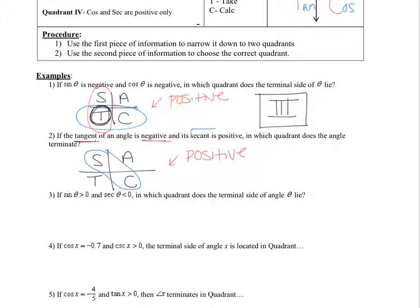Wherever secant is positive — well, secant is the reciprocal of cosine, so we look for where cosine is positive. Cosine is positive in quadrant one and where we see a C, quadrant four. So those two quadrants overlap with where tangent is negative, and the answer is quadrant four.